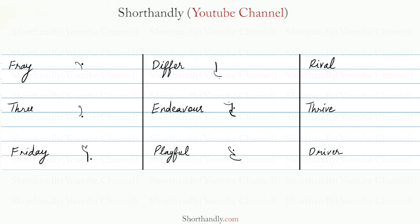Next word is Rival. Rival will be written like this. Next word is Thrive. Thrive will be written like this. Next word is Driver. Driver will be written like this.